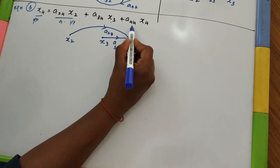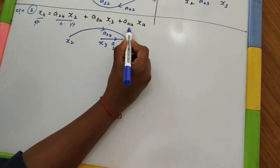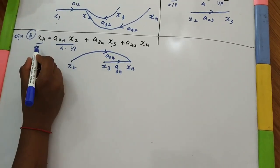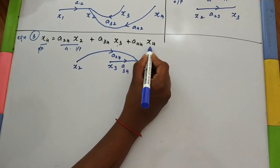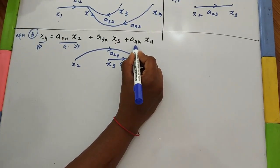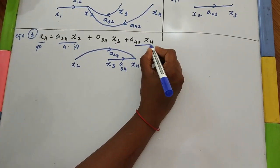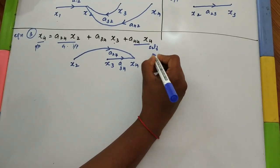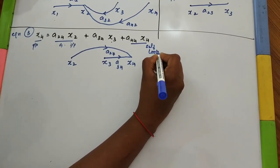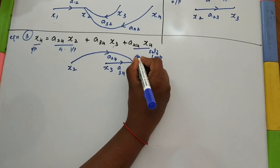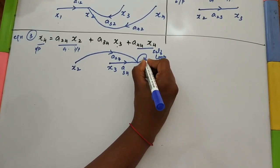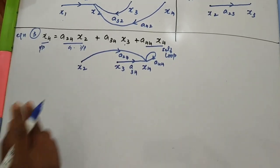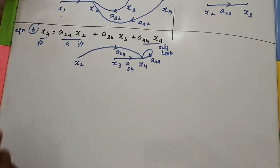The last term in the third equation is A44·X4. X4 node is both the output and the input. That means the starting node and terminal node are both the same — this represents a self-loop. Starting node and terminal node are both the same with a gain value A44. This is the signal flow graph with respect to equation 3.